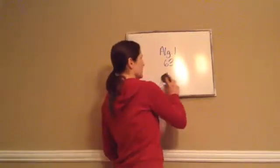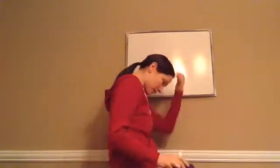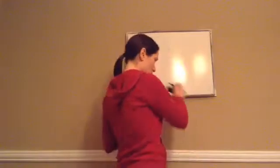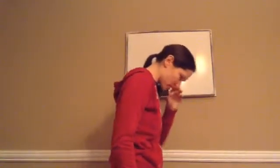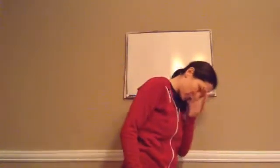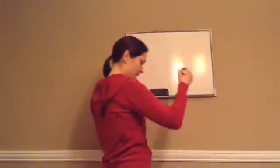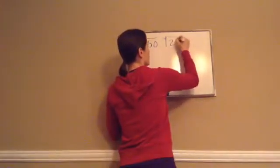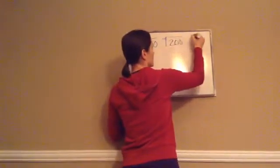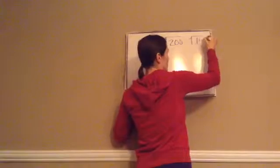Algebra 1, Lesson 63. This one is on the product of square roots rule and repeating decimals. Let's talk about the square roots first. We're going to be finding the square root of 50, square root of 200, and the square root of 147.